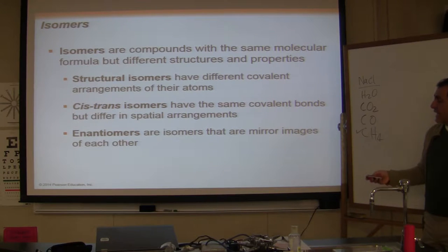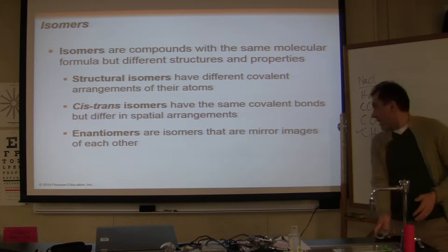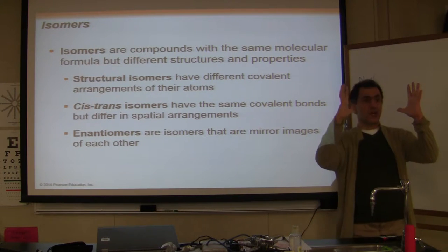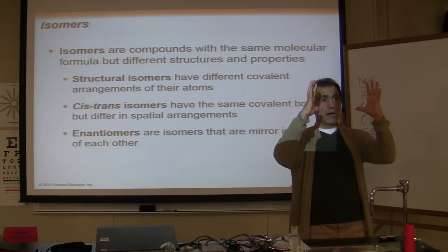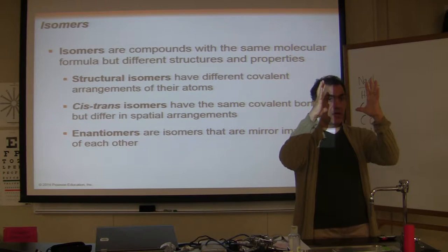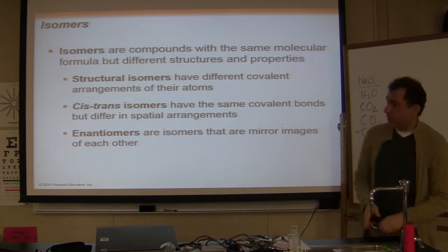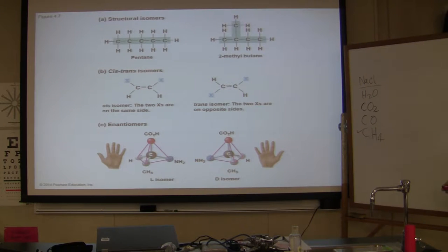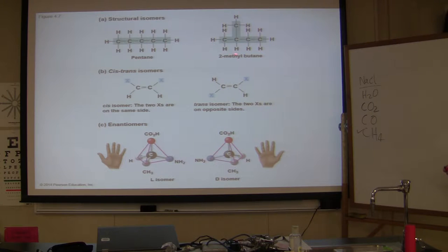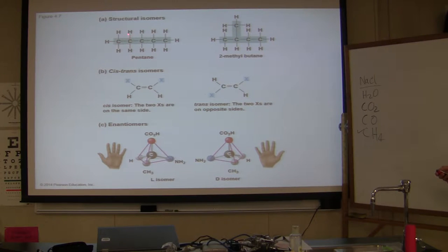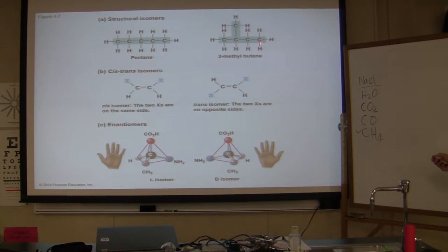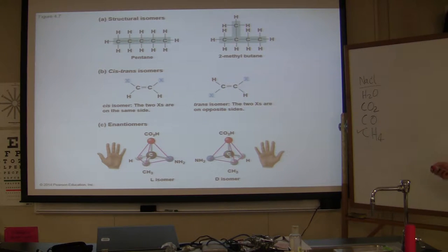Enantiomers are isomers that are a mirror image of each other, just like your hands — your hands are enantiomers. Looking at pentane and 2-methylbutane: they have the same number of carbons and hydrogens but are completely different in structure. That's what structural isomers are.